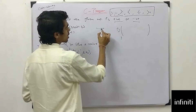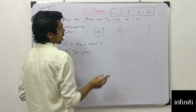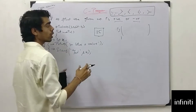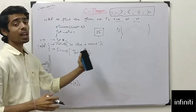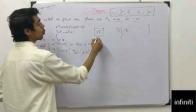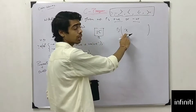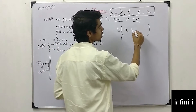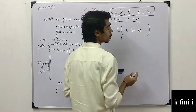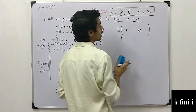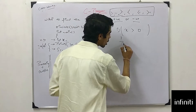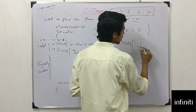Let x be 25. We know 25 is positive, but the computer doesn't know that. So we ask the computer: is 25 greater than 0? We write: if x is greater than 0, then print 'positive number'.